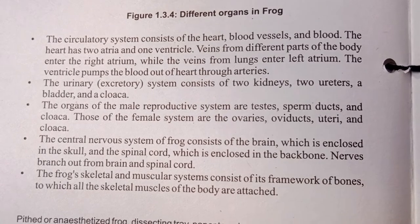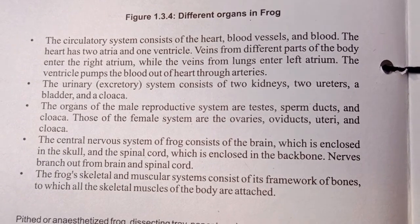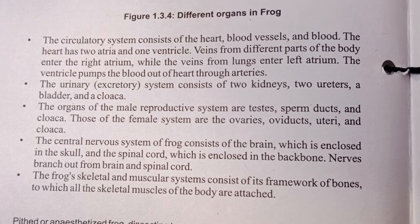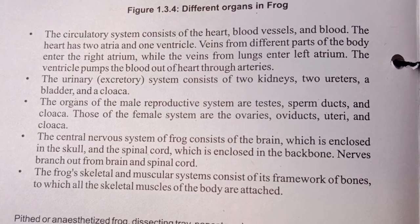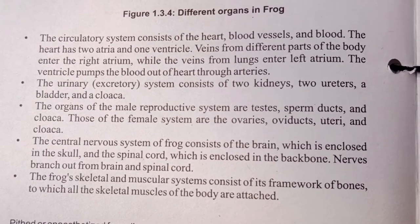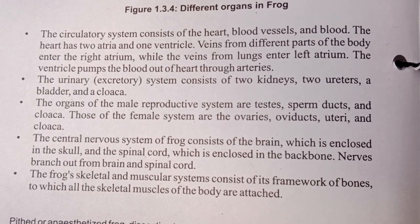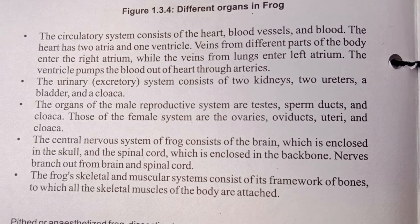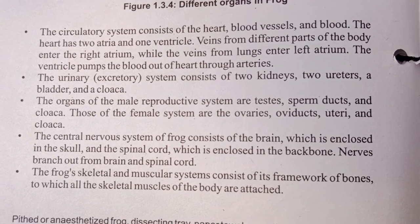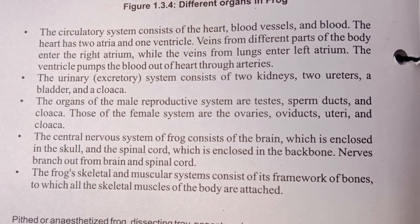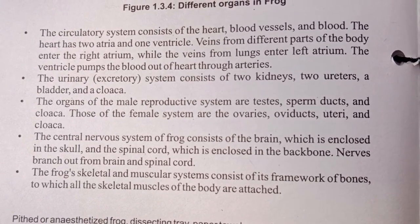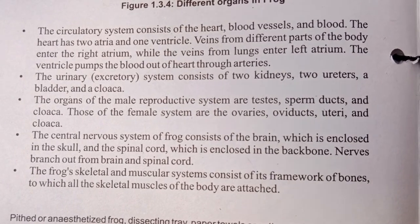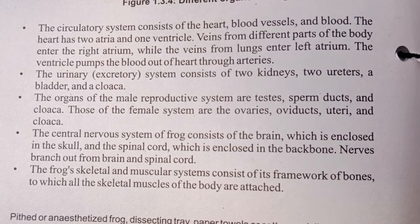The urinary system consists of two kidneys, two ureters, a bladder, and a cloaca. The male reproductive system consists of testes, sperm ducts, and a cloaca. The female reproductive system consists of ovaries, oviducts, and a cloaca.